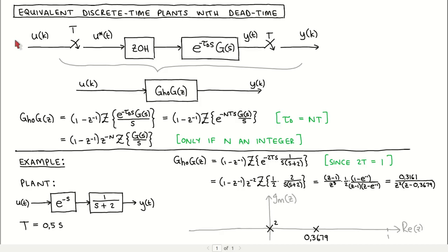The continuous time plant for which we want to find an equivalent discrete time plant model is described by this transfer function which consists of the transfer function g of s times e to the power minus tau d s. The transfer function e to the power minus tau d s corresponds to a constant time delay of tau d seconds.